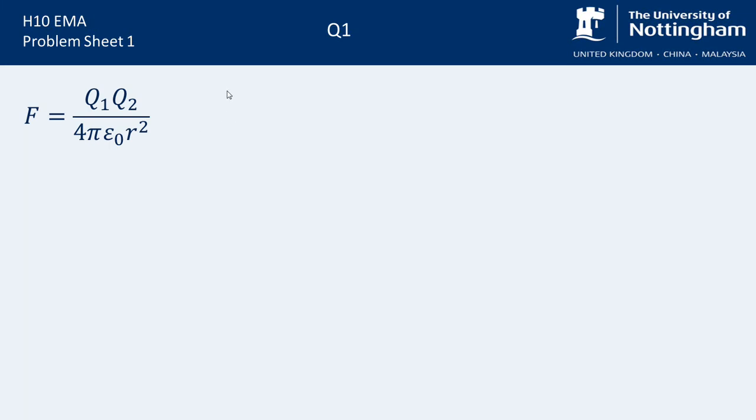So we want to find F is equal to, where Q1 is 1×10^-6 multiplied by 2×10^-6. That's the top bit divided by 4π times epsilon_0. Epsilon_0 is a universal constant and we're given this. It's 8.854×10^-12 and that's in farads per meter but we don't need that for now.